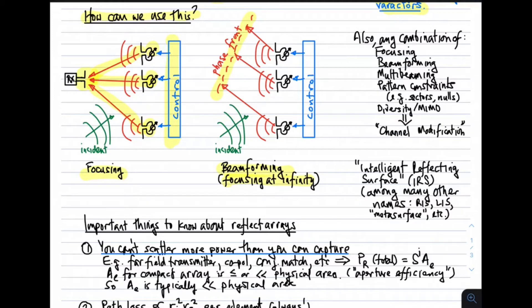Of course, if you see those two possibilities, you see that there are many other possibilities. In addition to focusing and beamforming, you can do multi-beaming, pattern constraints, diversity and MIMO. More generally, you can think about this reflect array as a way of doing propagation channel modification — a way to create additional multipaths or to control the characteristics of multipaths in a larger network. This leads to the concept of intelligent reflecting surfaces, or IRSs. These go by many other names: reflecting intelligent surfaces, large intelligent surfaces, meta-surfaces — all meaning more or less the same thing.